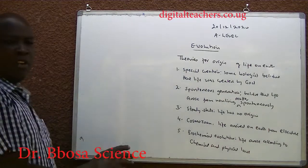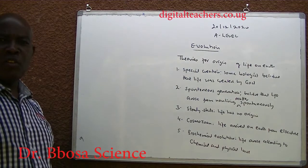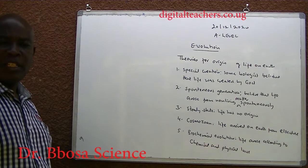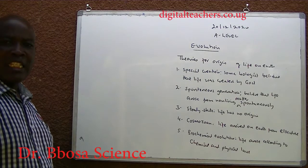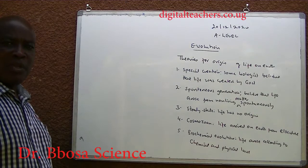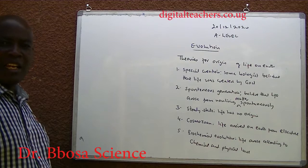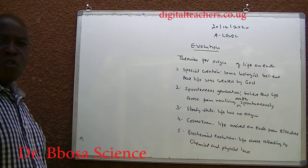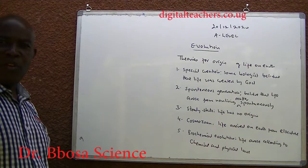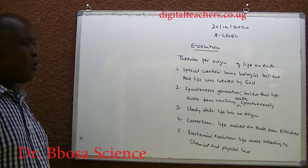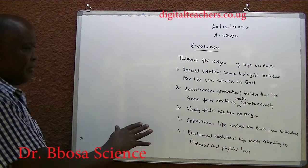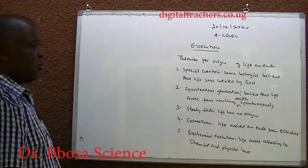Theories for origin of life on earth. One is special creation. Here, some biologists believe that life was created by God or some supernatural power.